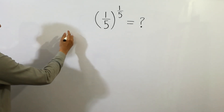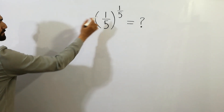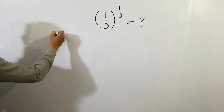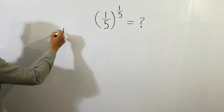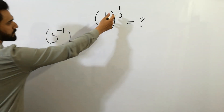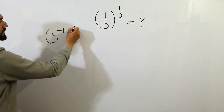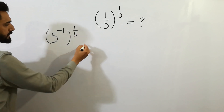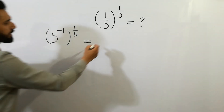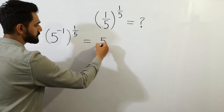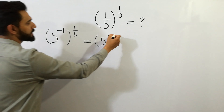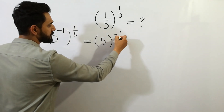We can write 1 over 5 as 5 to the power minus 1, to the whole power 1 over 5. We can write this as 5 to the whole power minus 1 over 5.